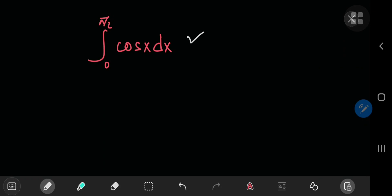The best way to integrate the cosine of x from 0 to pi by 2 is by using the following reduction formula.